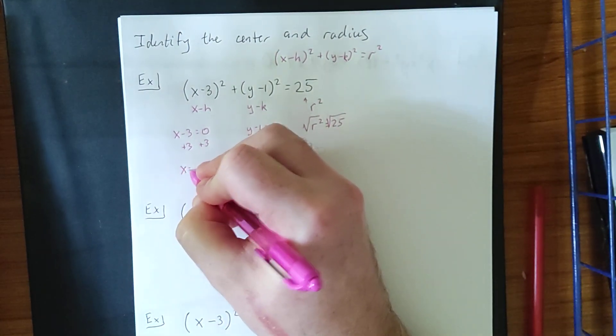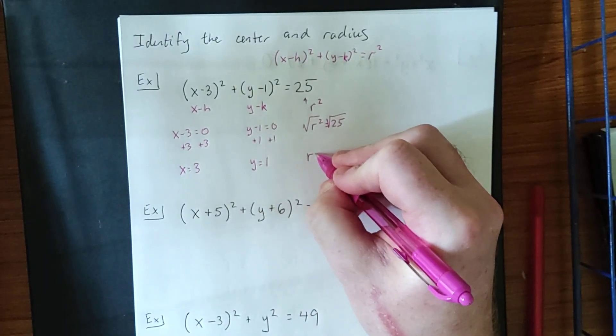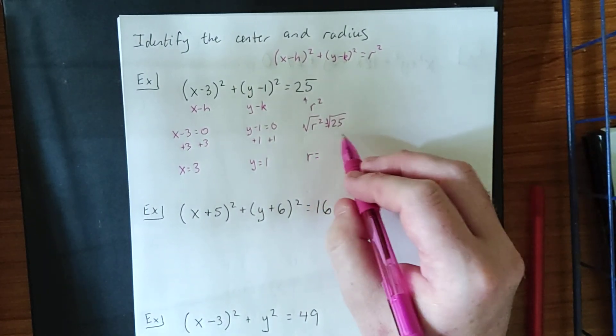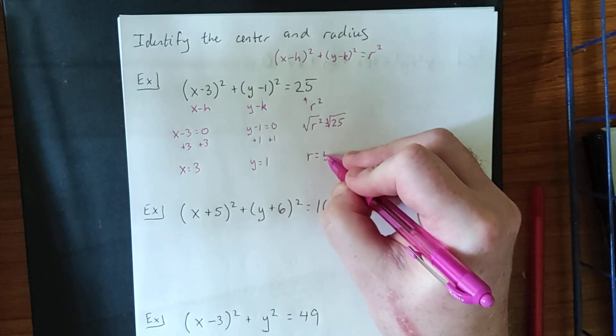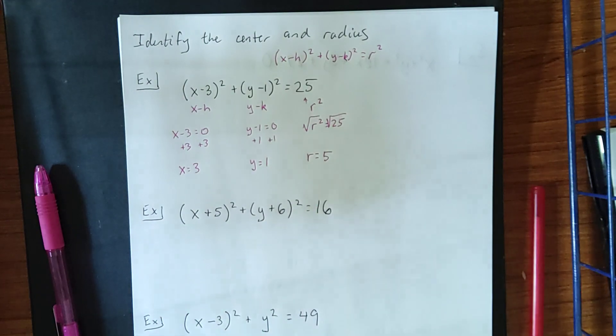So, we'll get x is equal to 3, we'll get y is equal to 1. Normally, when we take the square root of both sides of an equation, we would see a plus or minus pop up. However, given that the radius is referring to a distance, we would say that we only need the positive square root.